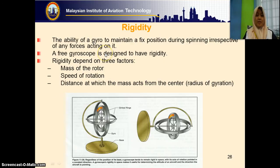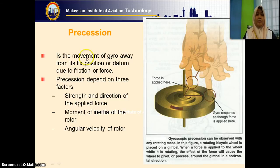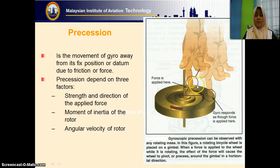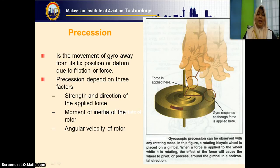The next property is precession. Rigidity is the ability to maintain a fixed position, but precession is the movement of the gyro away from its fixed position due to friction or applied force. When you have a gyro that rotates, it has rigidity. When I apply a force, this gyro will tend to precess. You must remember: precession or the movement of the gyro is not in line with the force being applied, but always at 90 degrees in the direction of rotation.